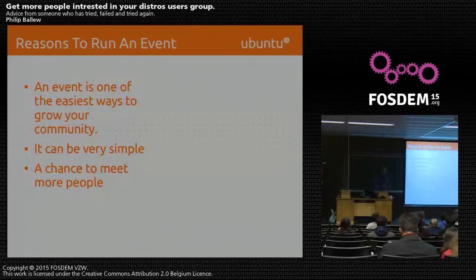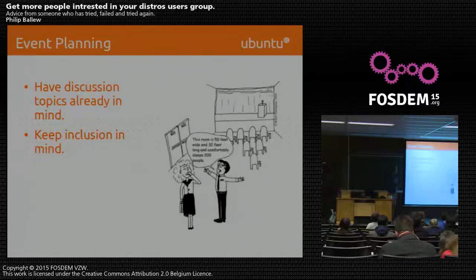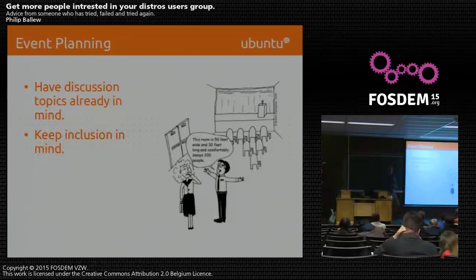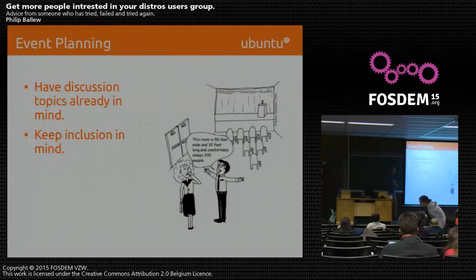When you're actually running your event or group, many people get started but then realize they don't have the setup or ability to run what they need. It's important to have discussion topics already in mind when your users sit down. Keep inclusion in mind — understand that you're going to have different people come to your group. They might not have the technical skills you do, or they might have more, but try to find a way to relate to them the best you can.